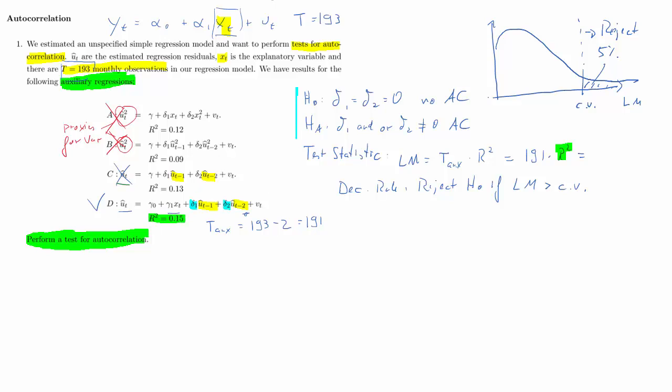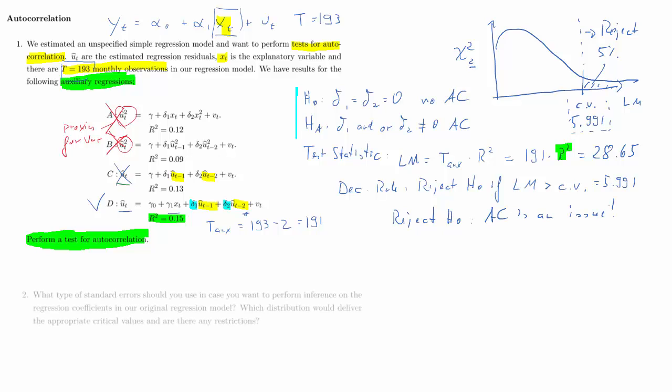The R squared from our auxiliary regression is 0.15, so the value for our test statistic is going to be 28.65. Is that larger or smaller than the critical value? We need to find a critical value from a table. For the chi-square table we have two degrees of freedom, we are testing two restrictions, and the correct critical value is 5.991. Since our test statistic is clearly larger than that, we shall reject the null hypothesis, and obviously autocorrelation is an issue.